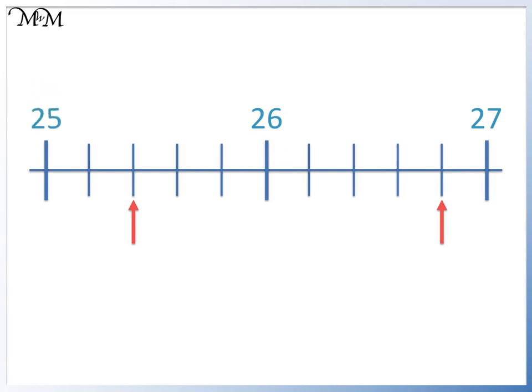Starting from 25, we have 25.2, and 25.4, which is our first answer. Starting from 26, we have 26.2, 26.4, 26.6, and 26.8, which is our second answer. We could have also found the second answer by counting back from 27.